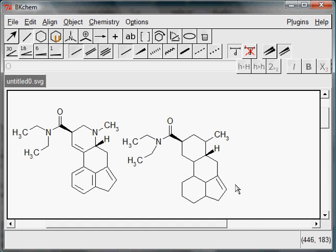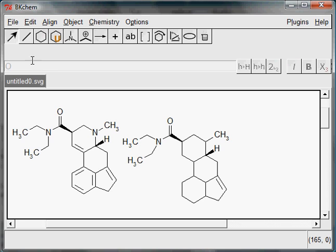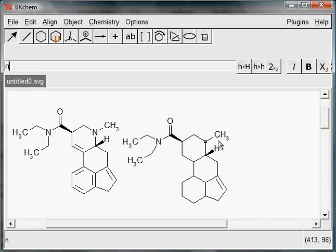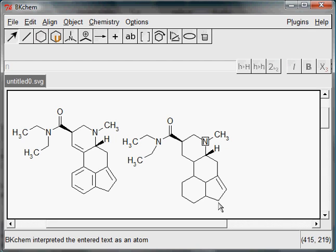To change carbons to other atoms, select edit mode, click on an atom, and type the symbol. Continue by pressing enter.